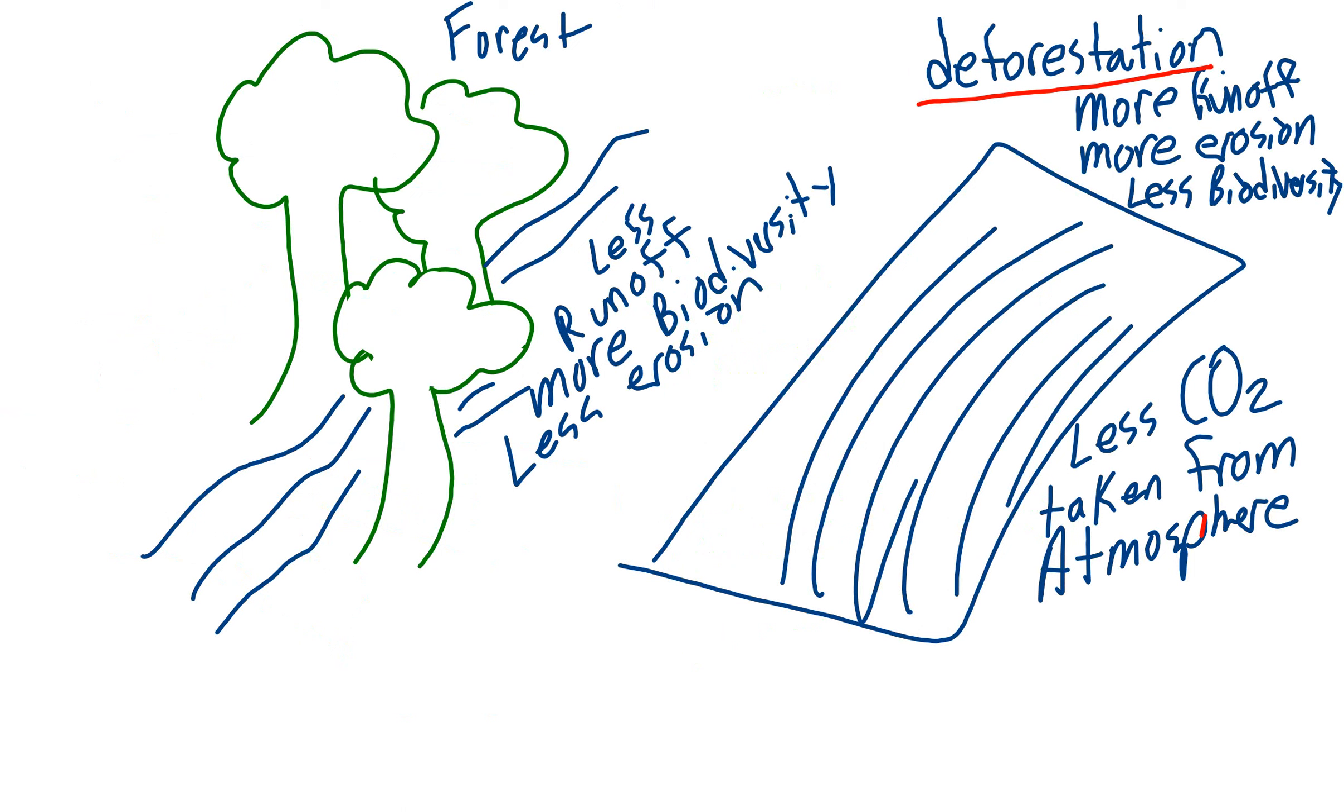And because there's less runoff, there's less erosion. But when we cut down a forest, now there's nothing to slow down the runoff. So instead of infiltrating, it just runs off. That means there's more erosion.